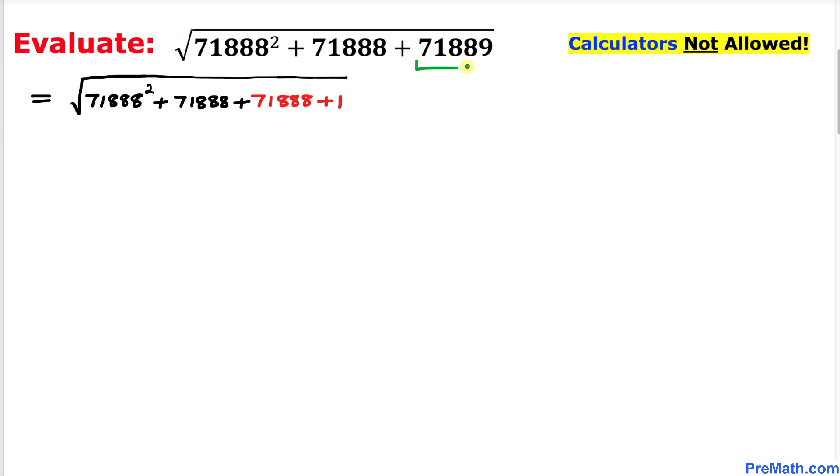Here's our next step. I have just tweaked this number as 71888 plus one, and the rest are the same numbers. Now we can see that 71888 and all these numbers are identical, so therefore I am going to use substitution.